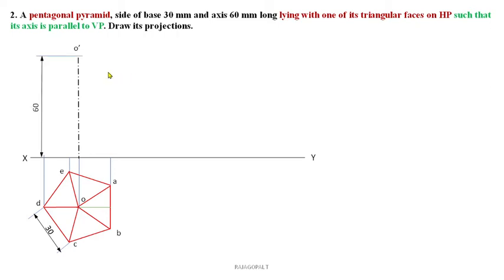Now you can join all the slant edges like O dash D dash, O dash E dash, O dash C, B, all the corners. As observer is standing here, I can say C, B is visible. A dash is invisible and B dash is invisible. D dash is also visible for the observer. As an observer is standing here, this is the simple position of this pentagonal pyramid.